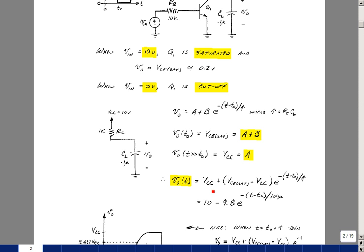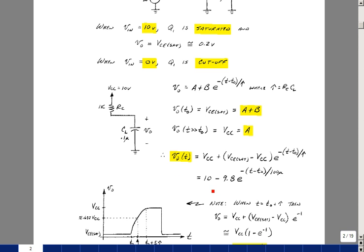So a is equal to vcc, and a plus b is equal to vcesat, so b equals vcesat minus vcc. In this case, we have 10 minus 9.8 times e to the minus t minus t0 over tau, and with our value of 1k and 0.1 microfarad, we have 100 microseconds.